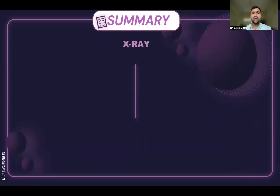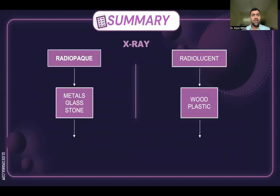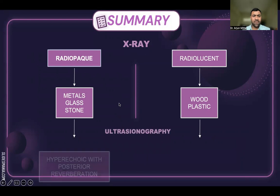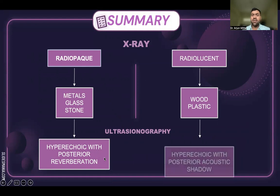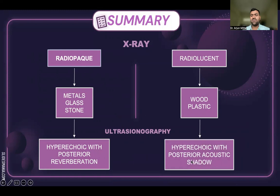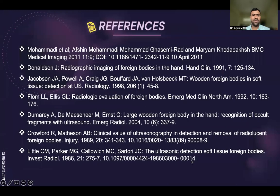Coming to the summary: a foreign body on X-ray can be radiopaque or radiolucent. Radiopaque foreign bodies include metals, glass, or stone, and radiolucent foreign bodies include wooden and plastic pieces. On ultrasonography, the radiopaque foreign body will appear hyperechoic with posterior reverberation artifact, whereas a radiolucent foreign body will appear hyperechoic with posterior acoustic shadow. Thank you so much.